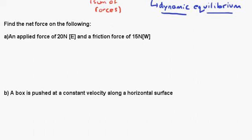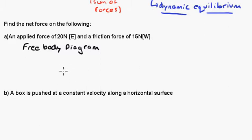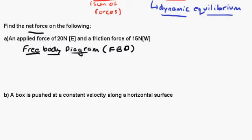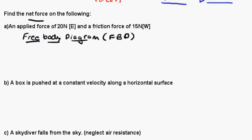On these questions, we want to find the net force. What we're going to do is draw something called a free body diagram. A free body diagram is a picture showing all the different forces acting on any given object at a given time. You may see that abbreviated FBD. It's really important with any question involving Newton's laws that you draw this free body diagram.